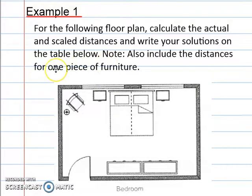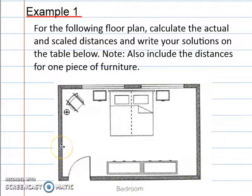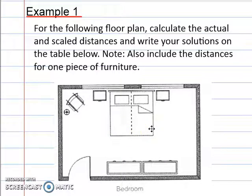Also include the distance for one piece of furniture. For your assignment you've got to do three pieces of furniture, but for this example we're only doing one. We've got a made-up room — when you do it, it's going to be your room at home. You'll be measuring that up, drawing a diagram for it.